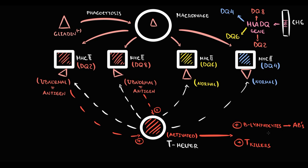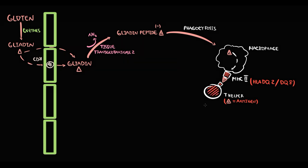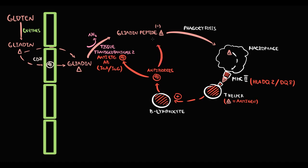In individuals with HLA-DQ2 and HLA-DQ8 alleles, the MHC2 receptor presents gliadin abnormally, causing T-helpers to recognize gliadin as an antigen and become activated. They then force B-lymphocytes to produce antibodies against everything present in the lamina propria. B-lymphocytes produce antibodies against tissue transglutaminase — called anti-tissue transglutaminase antibodies, mostly IgA but with a minor IgG portion. They also produce IgG antibodies against deaminated gliadin and IgA anti-endomysial antibodies.